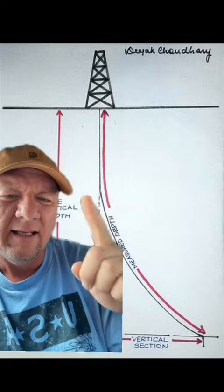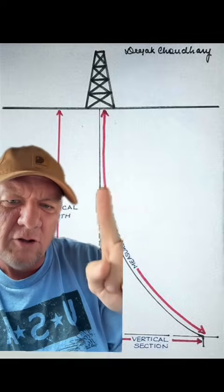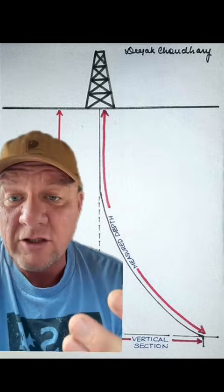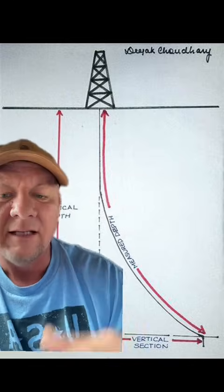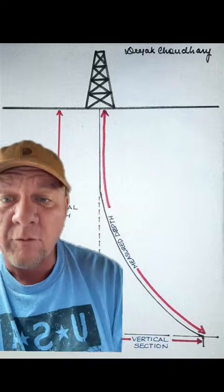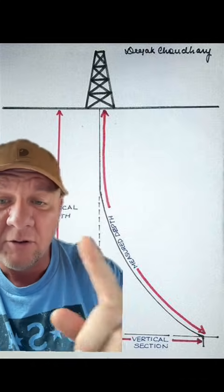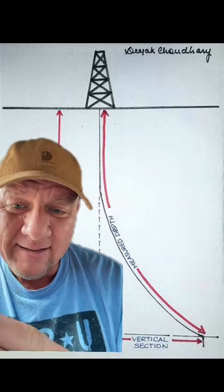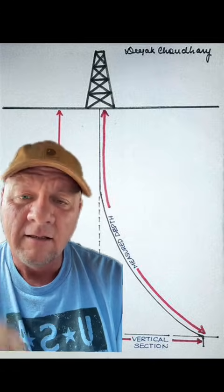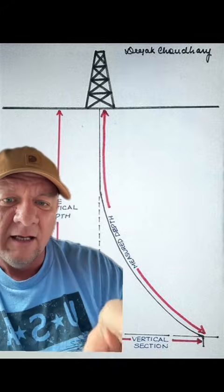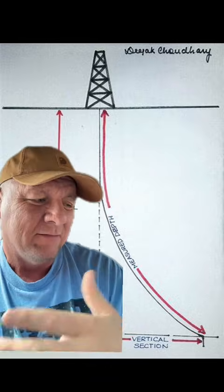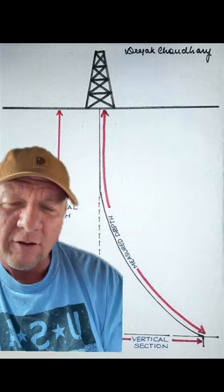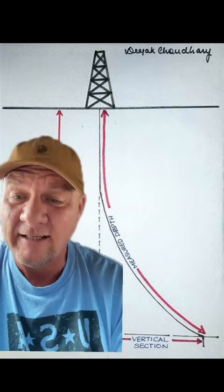It actually looks a little more like this. Your curve, or your build section, is a lot longer and more gradual than what is shown on those illustrations. Where you start to drill your curve — the build section, most commonly known in the industry — that's called the kickoff point. The kickoff point would be up here, and then down there when you get to 90 degrees, that's your landing point. This very gradual curve is anywhere from 800 to 1,200 feet in length — that's how gradual it is.